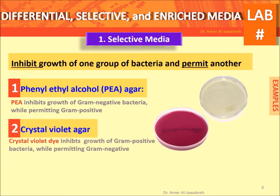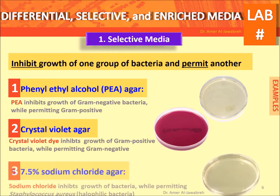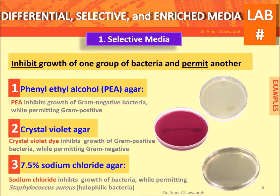Crystal violet agar: crystal violet dye inhibits gram-positive and permits gram-negative bacteria. 7.5% sodium chloride agar: sodium chloride inhibits growth of most bacteria while permitting Staphylococcus aureus.